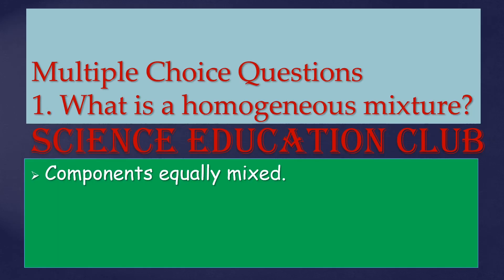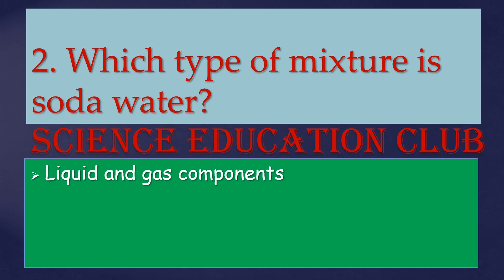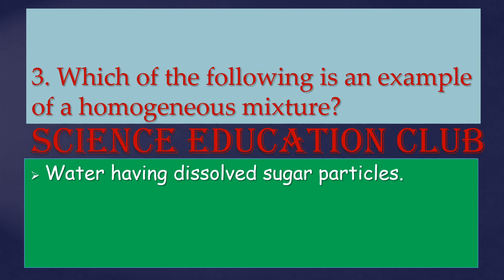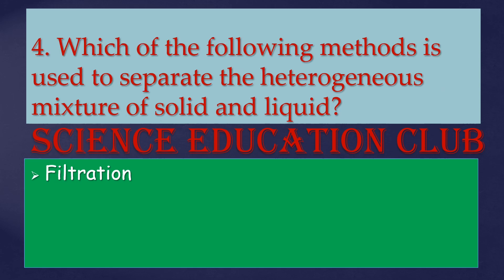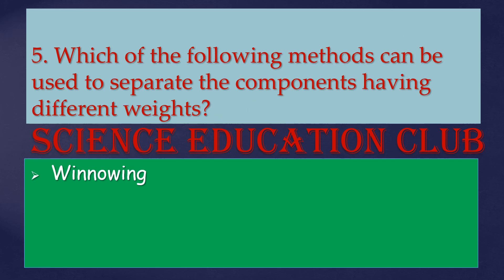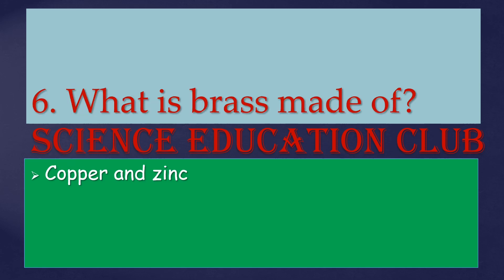Multiple choice questions. What is a homogeneous mixture? Components equally mixed — that is a homogeneous mixture. Which type of mixture is soda water? Liquid and gas components. Which of the following is an example of a homogeneous mixture? Water having dissolved sugar particles. Which method is used to separate the heterogeneous mixture of solid and liquid? Filtration. Which method can be used to separate components having different weight? Winnowing. What is brass made up of? Copper and zinc. Alloy is an example of a homogeneous mixture.